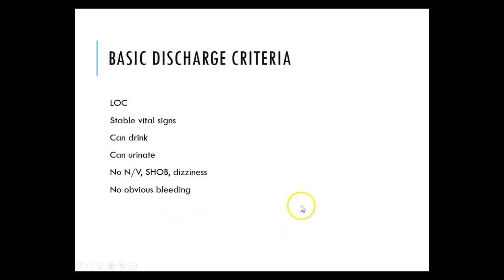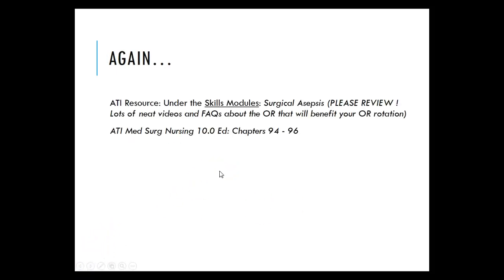Basic discharge criteria include: the patient is alert and oriented with an appropriate level of consciousness, has stable vital signs, can drink, can urinate, has no nausea, vomiting, shortness of breath, or dizziness, and there is no bleeding. Review your ATI resources — the skills module on surgical asepsis has helpful videos and cues about the OR.